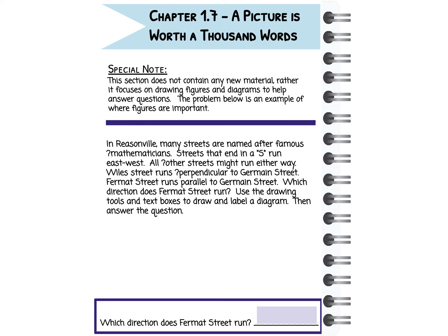Weill Street runs perpendicular to Germain. Fermat Street runs parallel to Germain. So which direction does Fermat Street run?